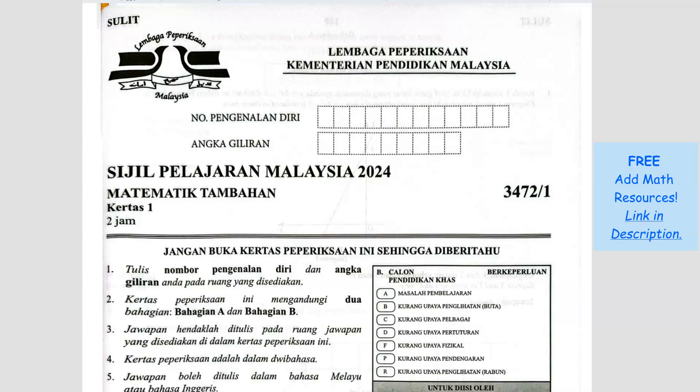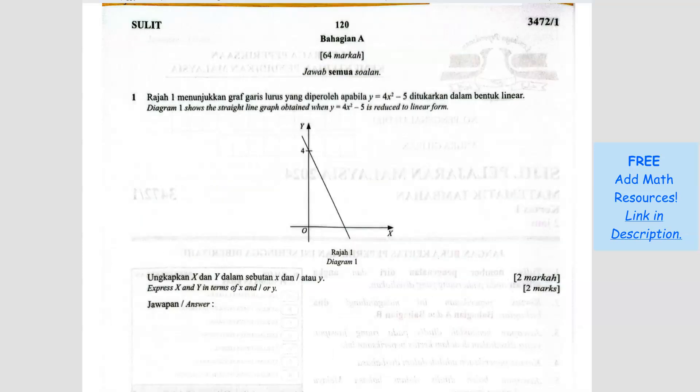SPM AtMath 2024, Paper 1, Question number 1. Diagram 1 shows the straight line graph obtained when y equals 4x² minus 5 is reduced to linear form. This is the linear form of this equation.